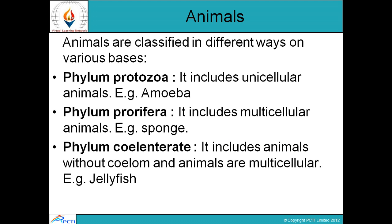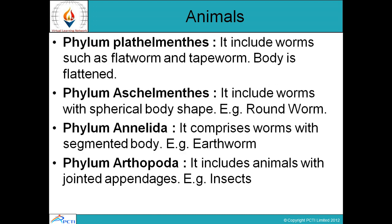The first phylum is Protozoa — these are unicellular animals with a very simple single nucleus, for example amoeba. Then phylum Porifera — these are multicellular animals such as sponge. Then comes phylum Coelenterata — these are animals with a cavity, multicellular, for example jellyfish.